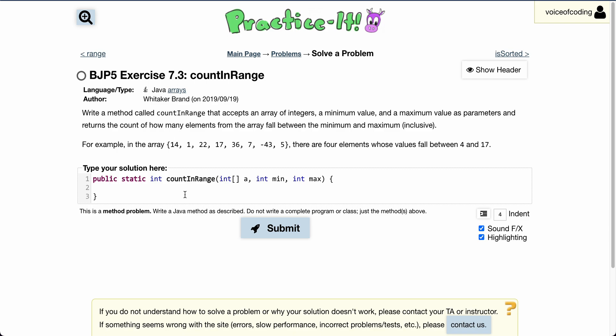The question asks us to write a method called count in range that accepts an array of integers, a minimum value, and a maximum value as parameters and returns the count of how many elements from the array fall between the minimum and maximum inclusive.